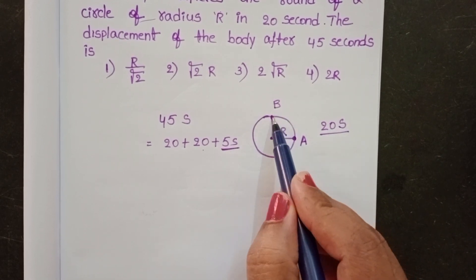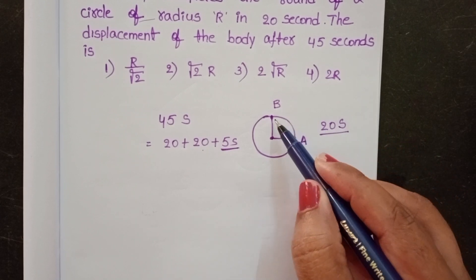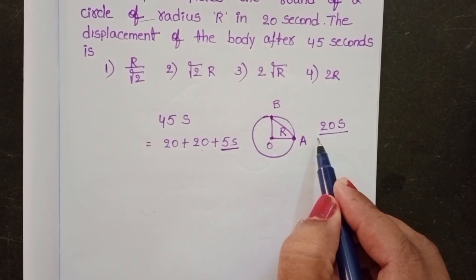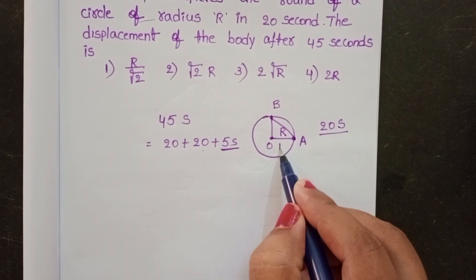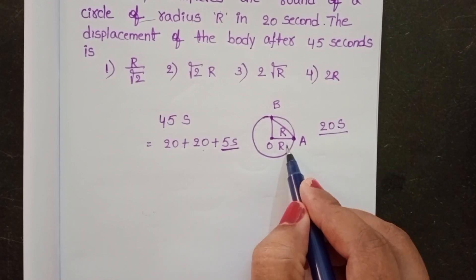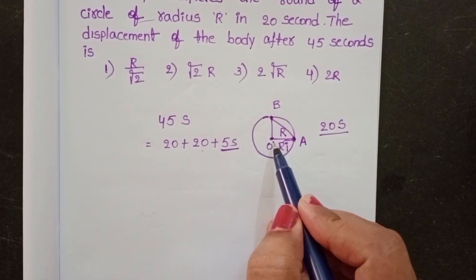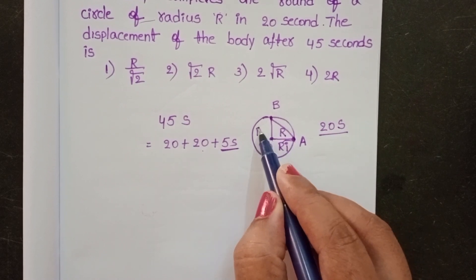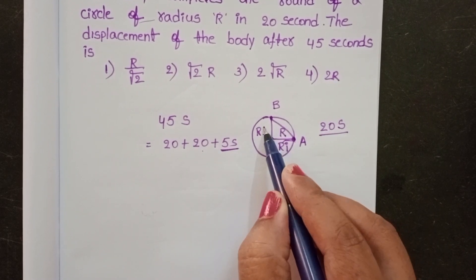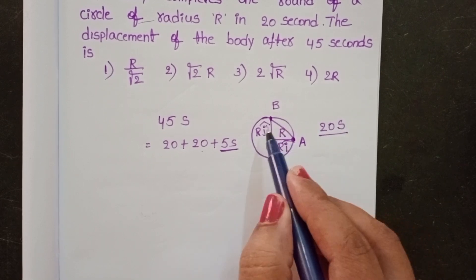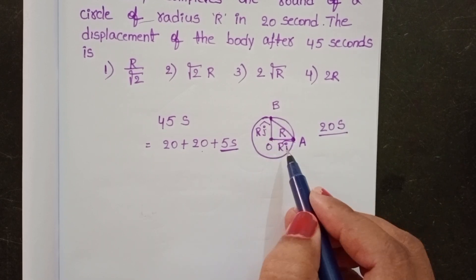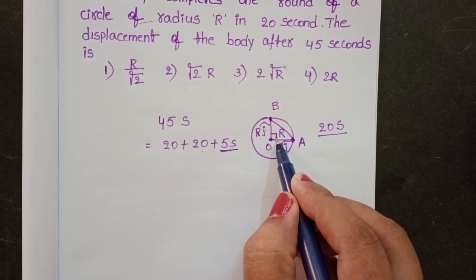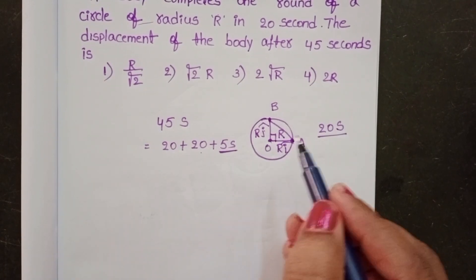The shortest distance is between A and B. Along the OA direction, taking vector form: R î cap. And along the OB direction, radius R in vector form: R ĵ cap. Here î cap and ĵ cap are the unit vectors, and the angle between these two vectors is 90 degrees.